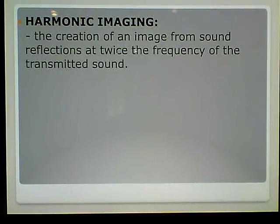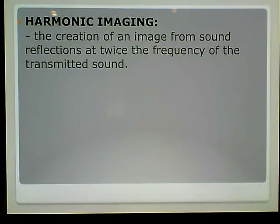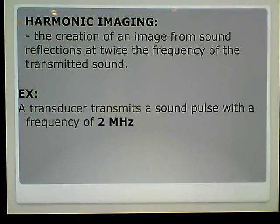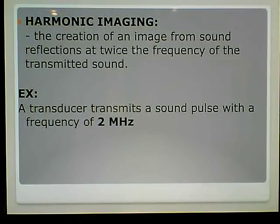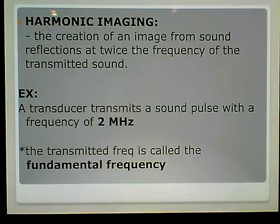Harmonic imaging is the creation of an image from sound reflections at twice the frequency of the transmitted sound. Now, automatically you ought to be thinking: how? Because if I pick up a 3 megahertz probe, how can I get 6 megahertz? Well, there's a simple answer, and we'll get to that. The transmitted frequency is called the fundamental frequency — that's the frequency we transmit from the transducer. Think of it as the original.